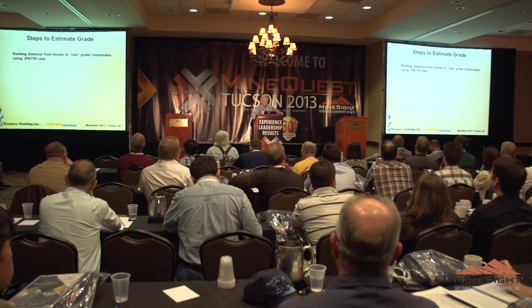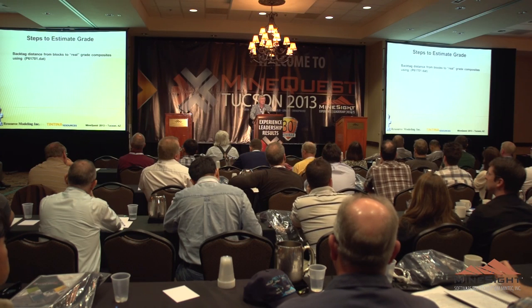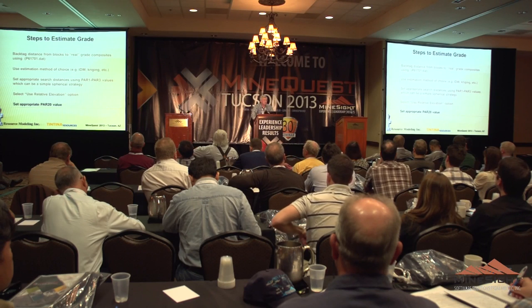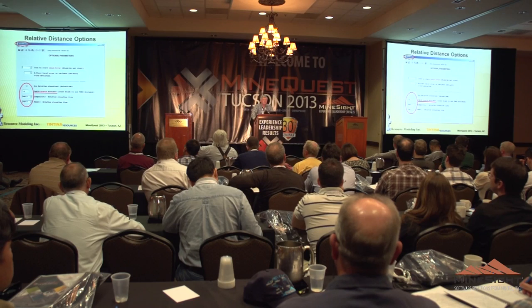Once we've got those distances, we back-tag them to the composites. Then we can estimate using kriging or inverse distance. I make sure my primary search distance is large enough to look at multiple drill holes, and then we use this relative elevation option. One of the key things is there's a parameter in the interpolation routines when you use relative elevation called par 20, and I've got a slide that's going to discuss par 20.